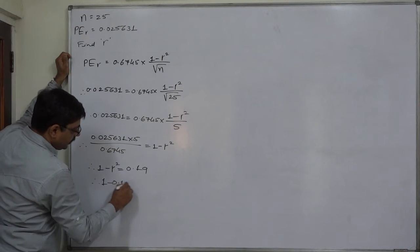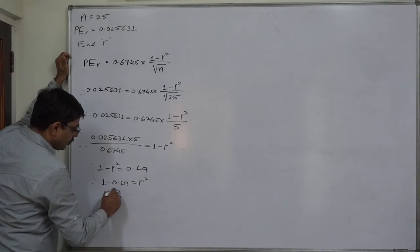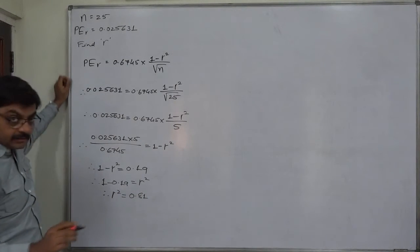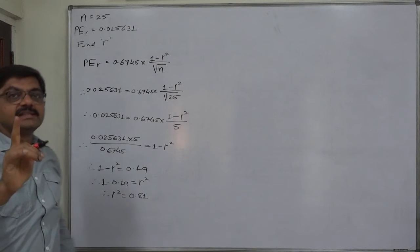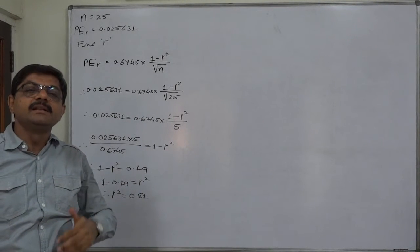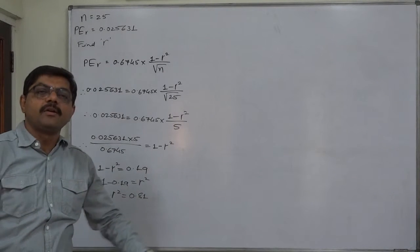Therefore, 1 - 0.19 = r², so r² = 0.81. But 0.81 is the squared value - it can be the square of either a negative or positive value.